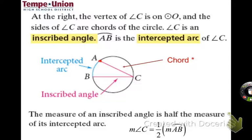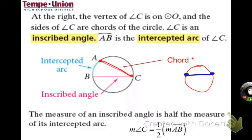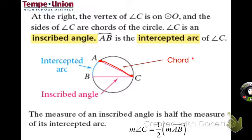A chord of a circle is a segment whose endpoints both land on the circle. You could draw several chords — for example, this segment here is a chord. The key feature is that the endpoints are right on the circle.